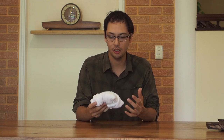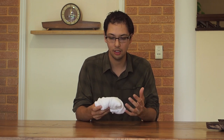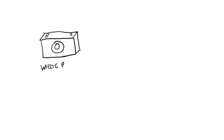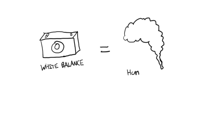Actually, under these different light conditions, the color of this towel is different, but my brain is compensating for that and making it look white. So essentially, the white balance function of your camera is just an emulation of this ability of the human brain to compensate for different lighting conditions.